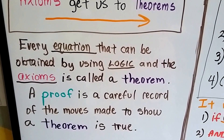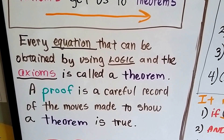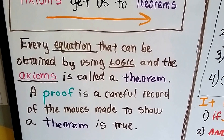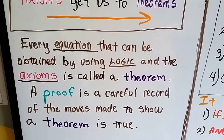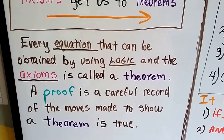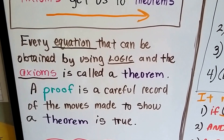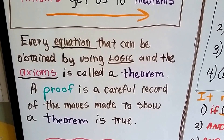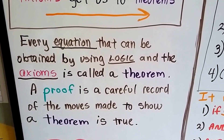A proof is a careful record of the moves made to show a theorem is true. If you've ever watched a professional chess game, you'll see the players writing down their moves, and you would be able to follow their logic throughout the game, seeing each move leading to the next that got them to their win.